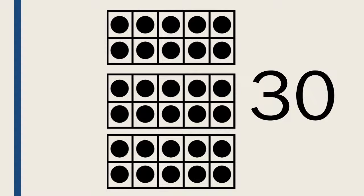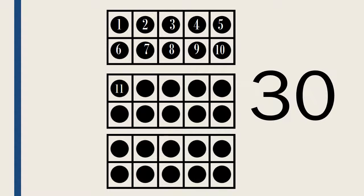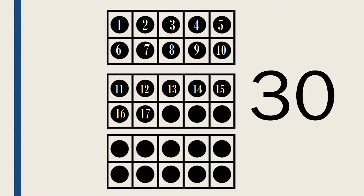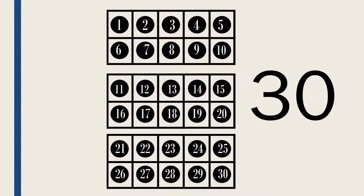Let's count to 30. One, two, three, four, five, six, seven, eight, nine, ten, eleven, twelve, thirteen, fourteen, fifteen, sixteen, seventeen, eighteen, nineteen, twenty, twenty-one, twenty-two, twenty-three, twenty-four, twenty-five, twenty-six, twenty-seven, twenty-eight, twenty-nine, thirty.